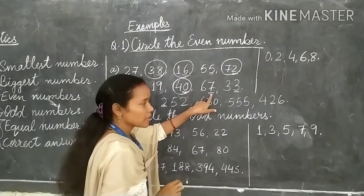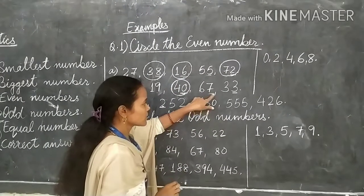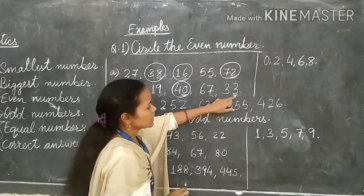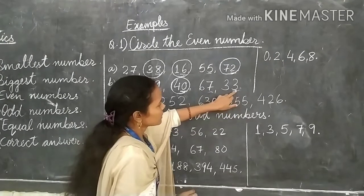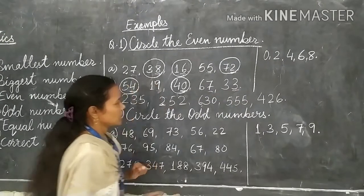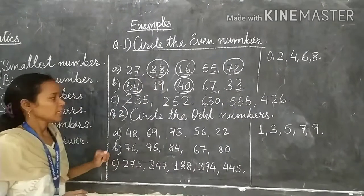7 is an odd number, so we will not circle 67. 3 is an odd number, we will not circle 33 also.